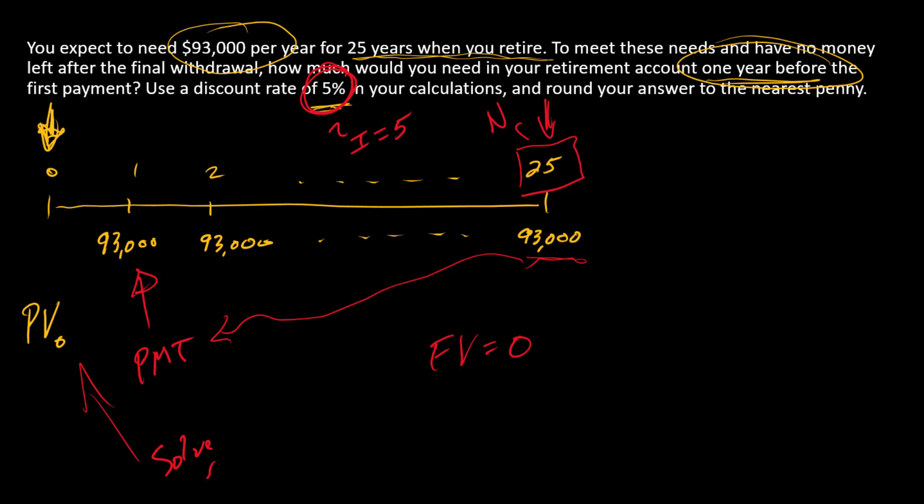We're going to get a negative number because your calculator has to balance inflows and outflows. We'll enter the $93,000 as a positive number—that's money coming into your pocket from the account. The PV is what you would have to put in the account to fund this, so that's going out of your pocket into the account.